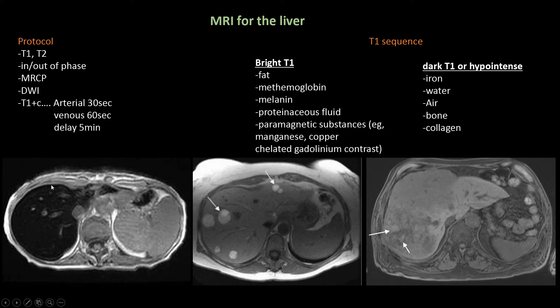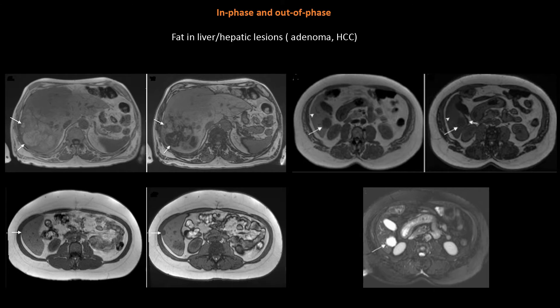This is a patient with hemochromatosis. As we said, iron appears dark on T1, so we can see significant drop of the liver signal due to iron deposition.